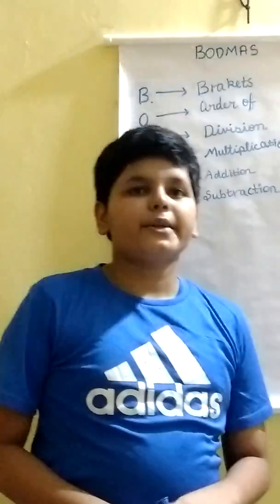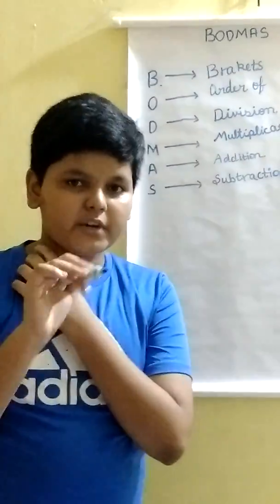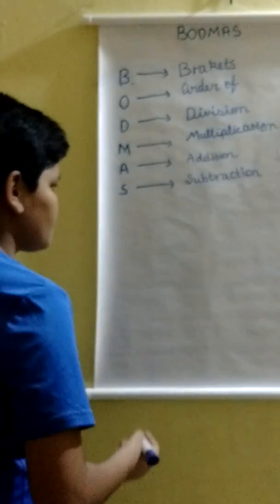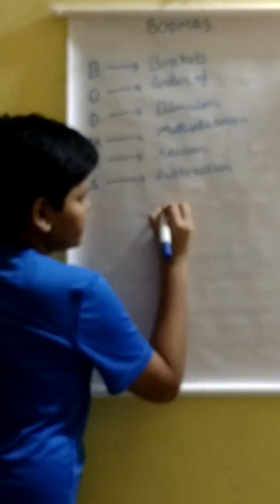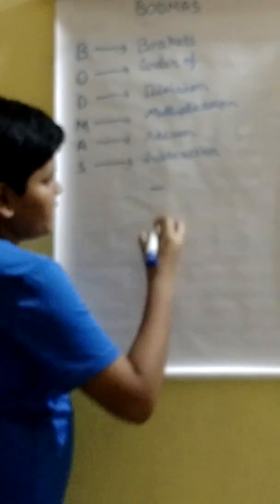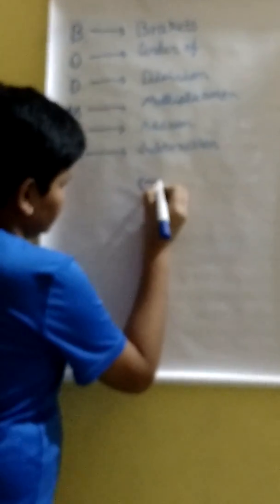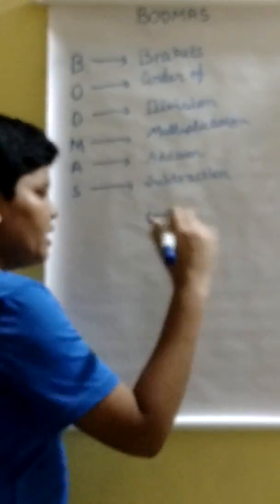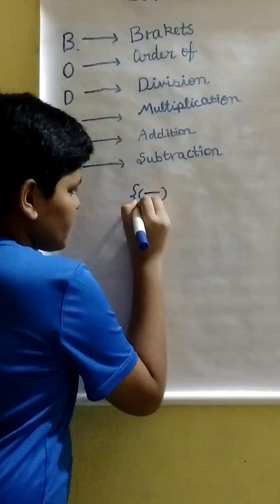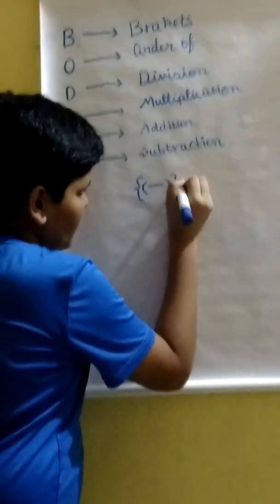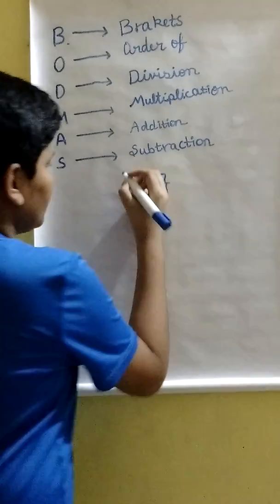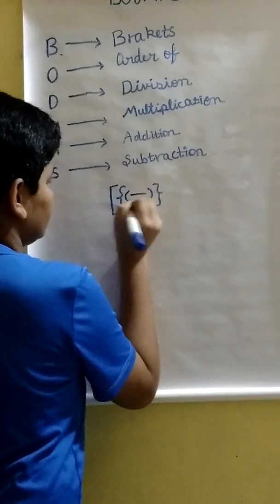There are 4 types of brackets. The first one is this. The second is this. The third one is this. And the last one, fourth one is this.